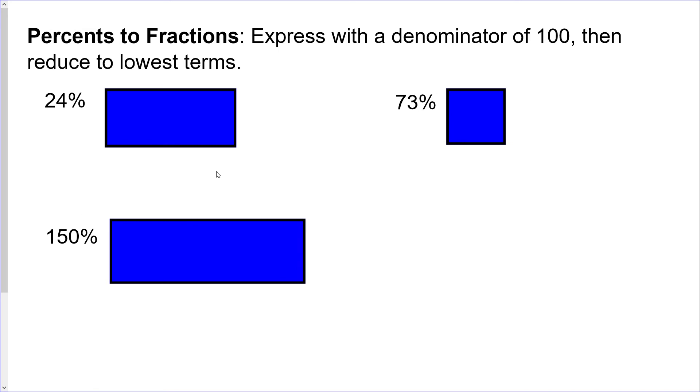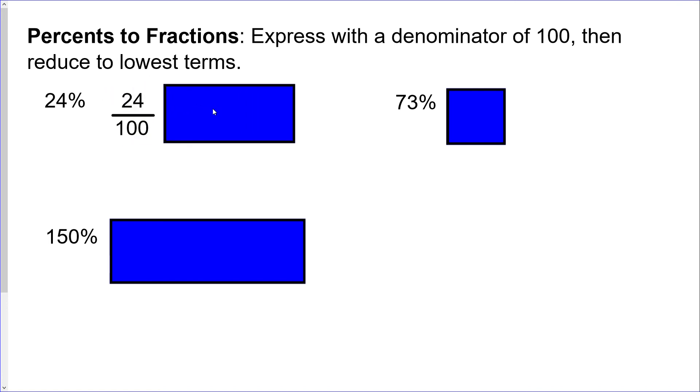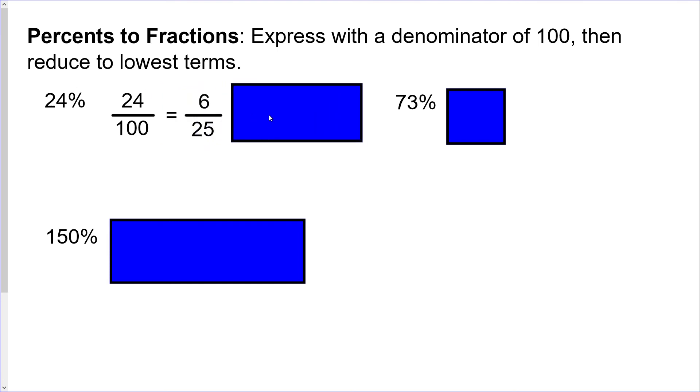And then on to our last one: converting from percents to fractions. This one takes a little bit longer but it's still not too bad. Express with a denominator of 100 and then reduce it to lowest terms. So first step, express with a denominator of 100. No matter what it is, denominator of 100. Express just means write it that way. So take your 24, put it above the 100, and then reduce to lowest terms. If you reduce that down to lowest terms, you get 6 over 25.